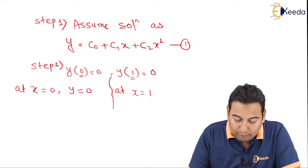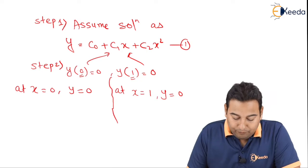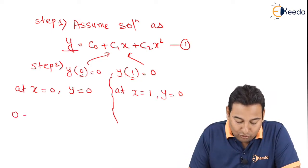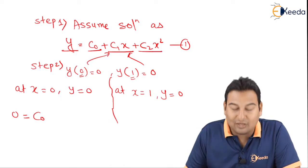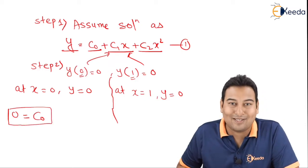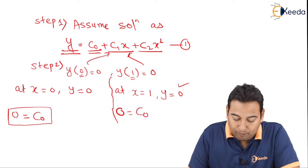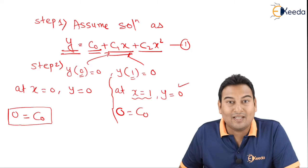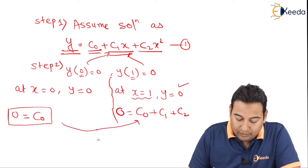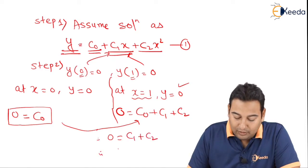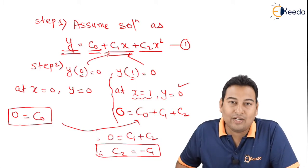Let us put these two conditions into equation 1. Substituting x = 0, y = 0: the right side gives c0, and since c1·0 and c2·0² are both zero, we get c0 = 0. For the second condition, substituting x = 1: 0 = c0 + c1 + c2. Since c0 = 0, we get c2 = −c1.